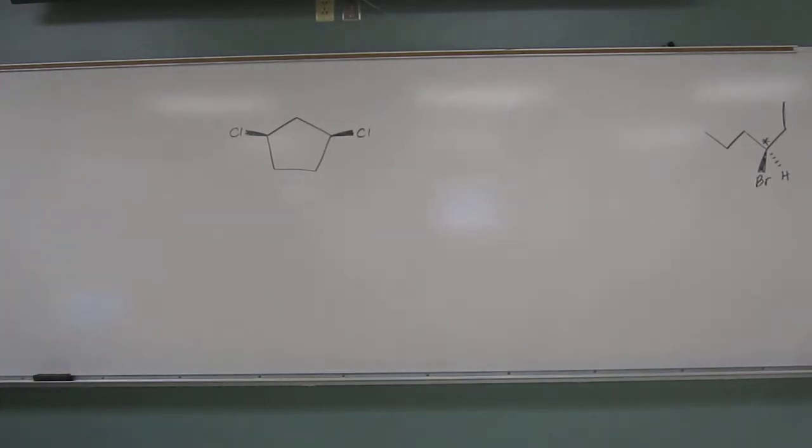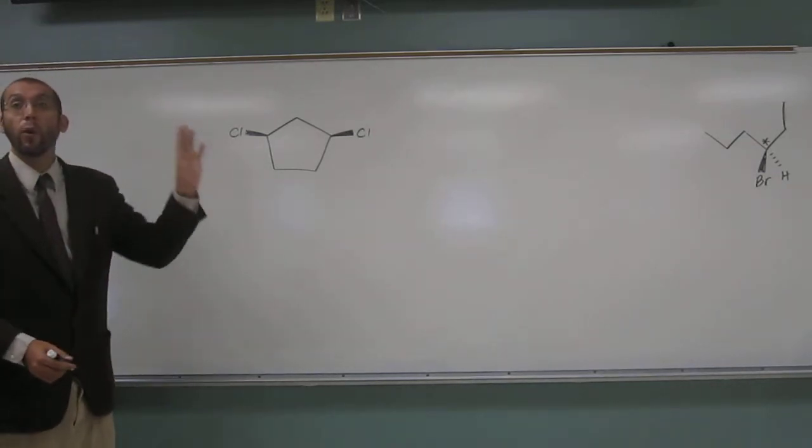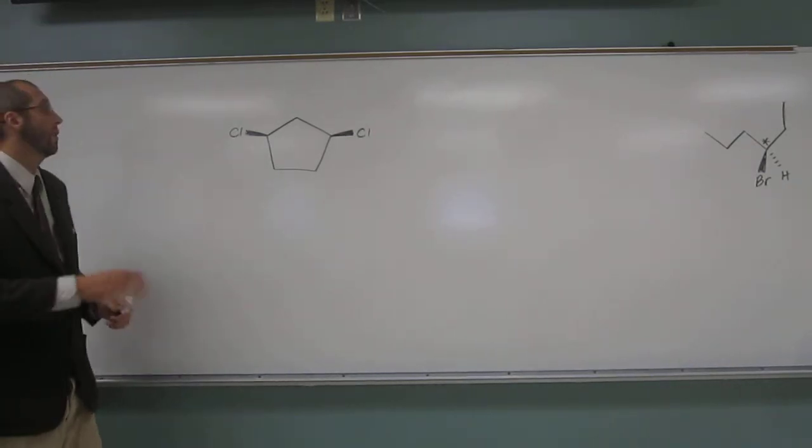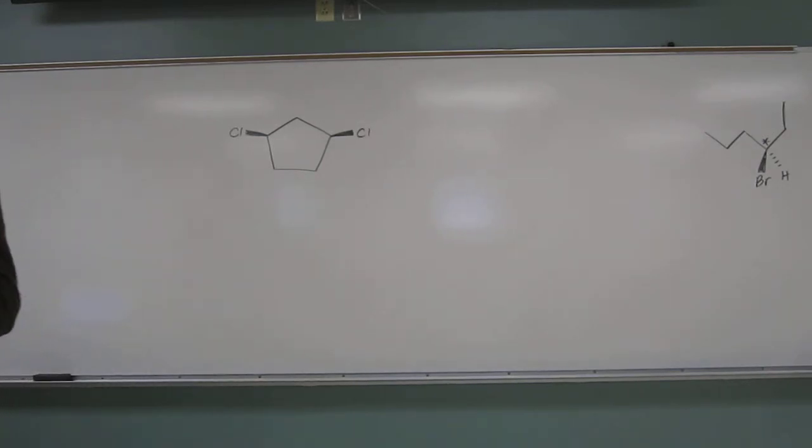So remember, what is the stereocenter? Carbon. Carbon, or any atom, with four different groups on it. So it's going to be a tetrahedral arrangement. So do we have any of those here? Four different groups. So there's two that are kind of good candidates, right? Hopefully everybody sees those two.